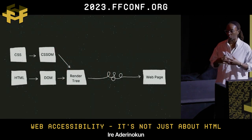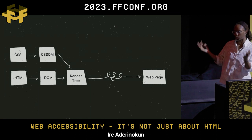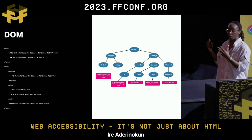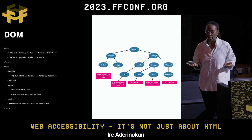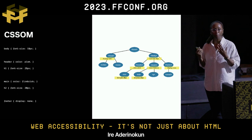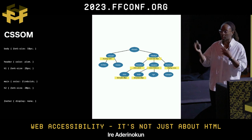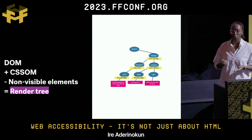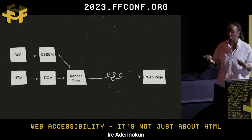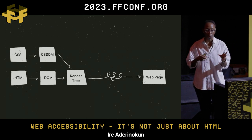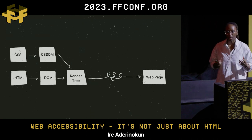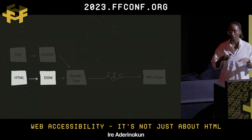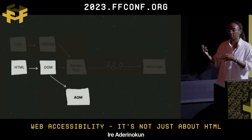Looking at the path from HTML and CSS to what's painted on the screen: from HTML we get the Document Object Model, which includes all the HTML elements and their content. From CSS we get the CSS Object Model, which includes all the styles for each element. These two together — minus any elements not visibly painted — form the render tree. Importantly, what assistive technologies use is mostly just HTML and the DOM, because those together are used to derive the Accessibility Object Model.